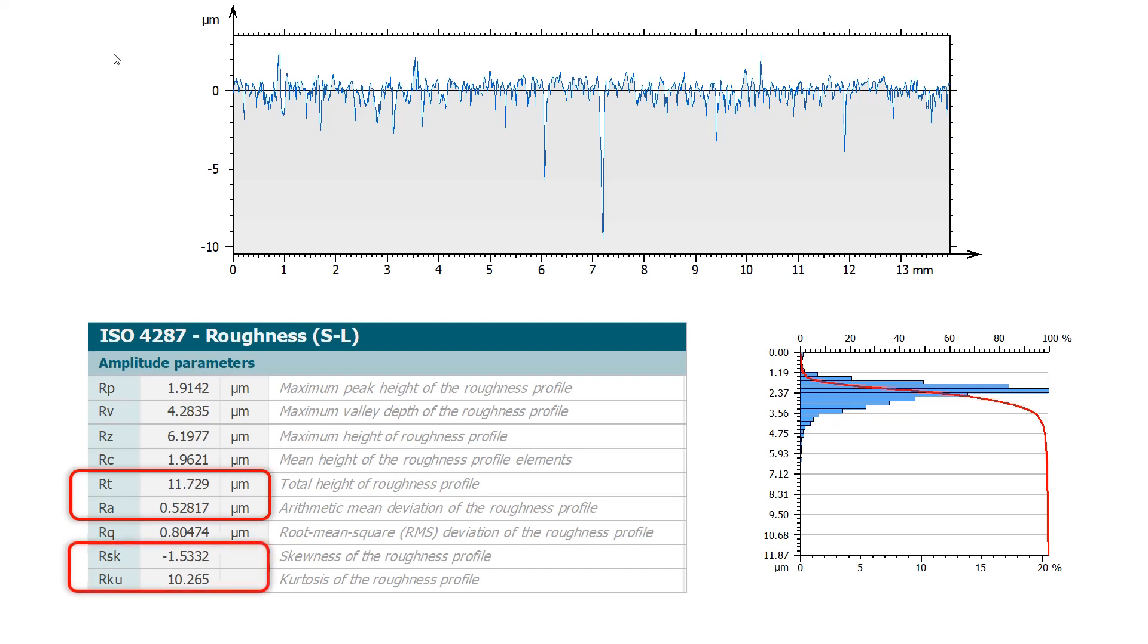The skewness parameter, RSK is negative and it confirms the presence of scratches below the main surface. The high value of kurtosis, RKU, indicates that most of the texture is concentrated around the mean height, which is high and close to the top of the surface.